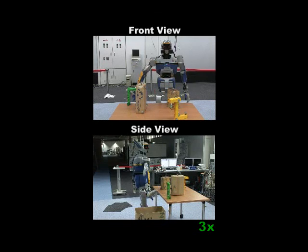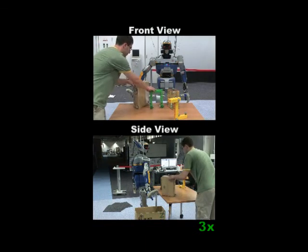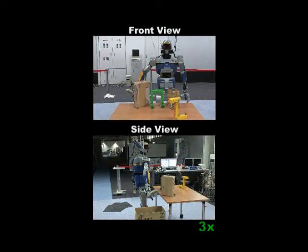Because we compute our grasp scoring function online, we can compensate for changing environments. Thus, we can pick the best stable, collision-free, reachable grasp for the current environment.